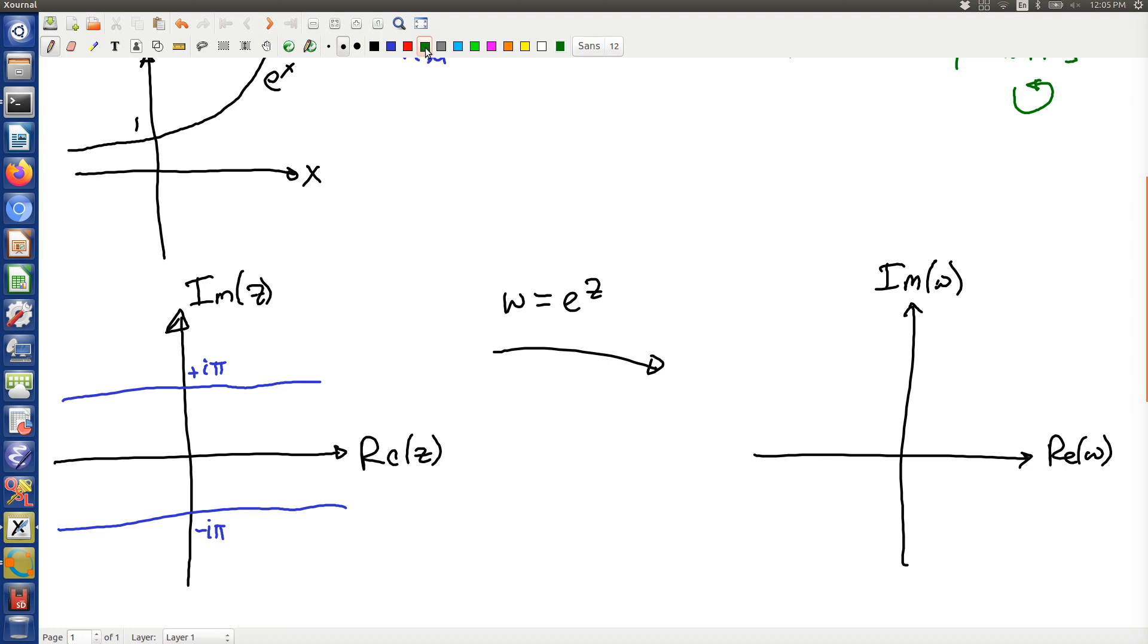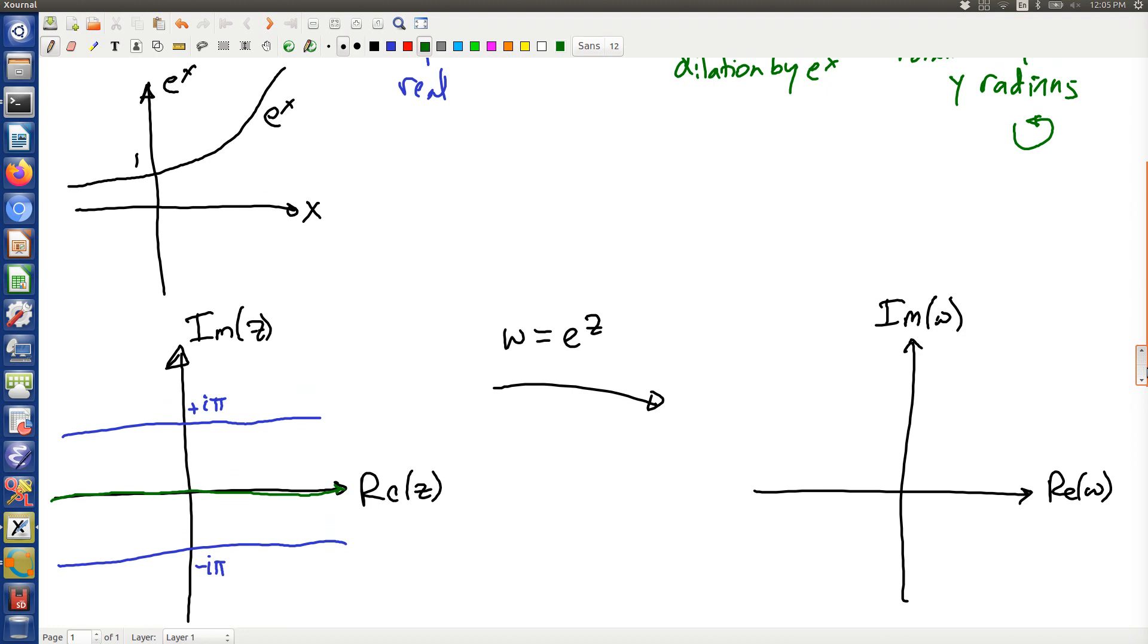Now within that strip I've got the real axis. The real axis in z works just like the e to the x function right there. So that e to the x function is strictly positive, so that gets mapped in the w space to strictly positive. And the thing to realize is that as you go off to minus infinity that gets down into this vicinity, and you go to plus infinity that's over here. There's a special point on here, e to the 0 gets mapped to 1.